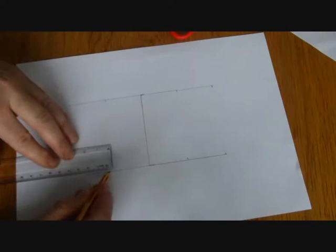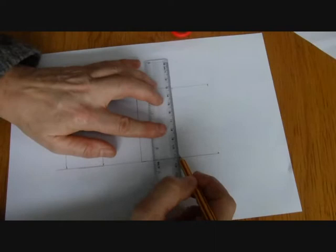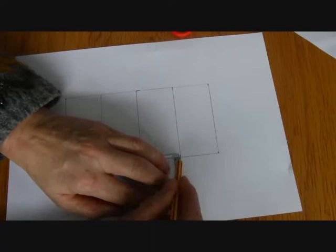Now you want four of those rectangles all along next to each other. So measure those out, making sure that you keep really good right angles in all the corners.